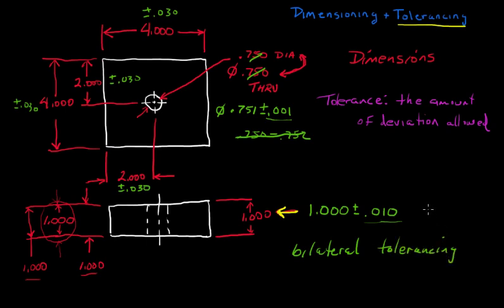Bilateral is just another term which means two directions — so these tolerances go plus or minus, and they're equal amounts, like plus or minus 10.